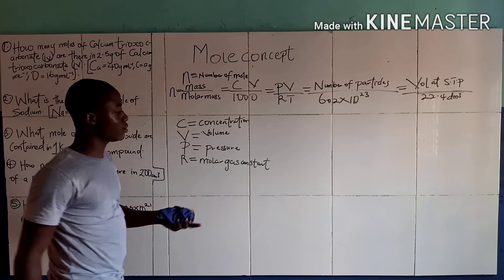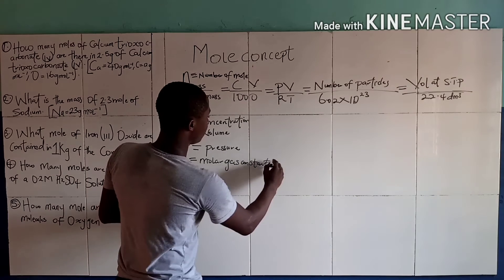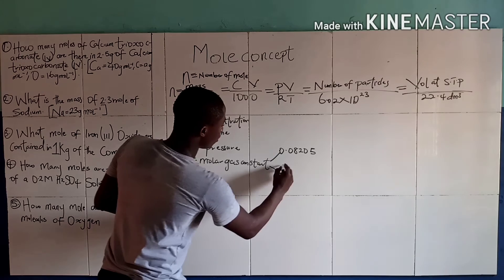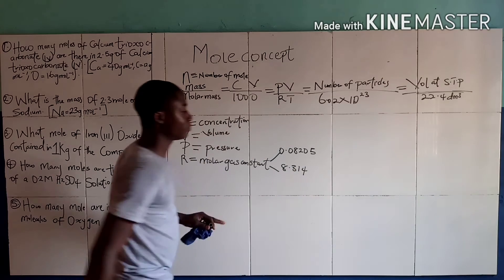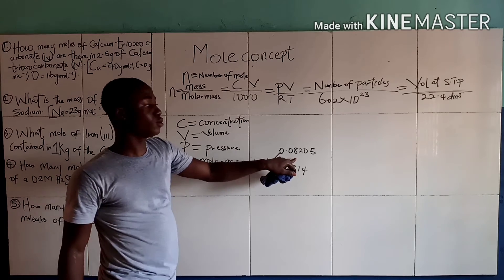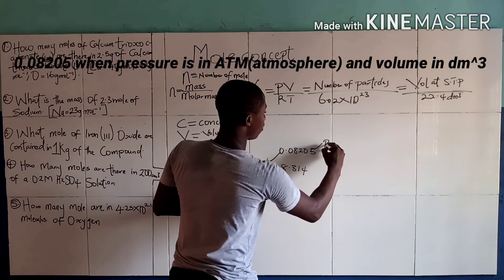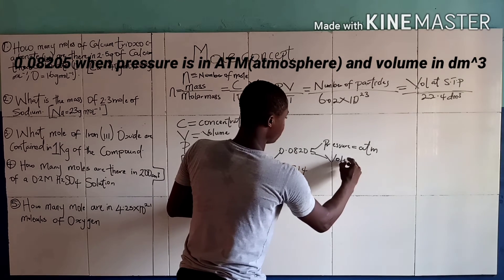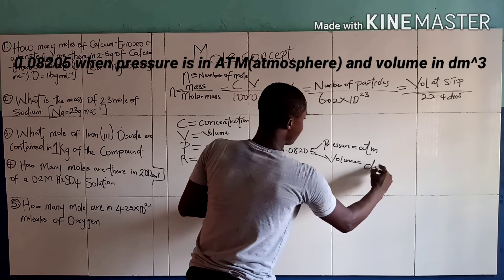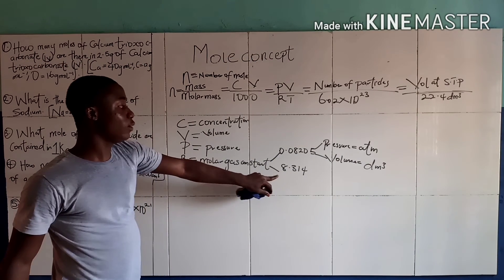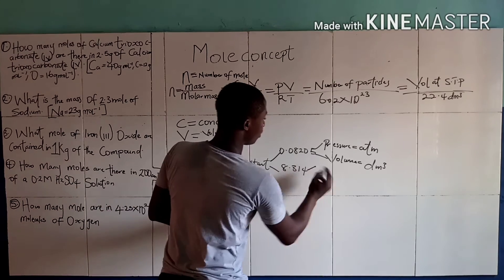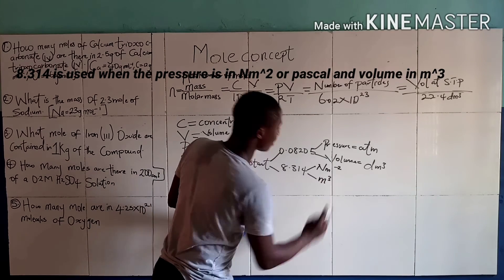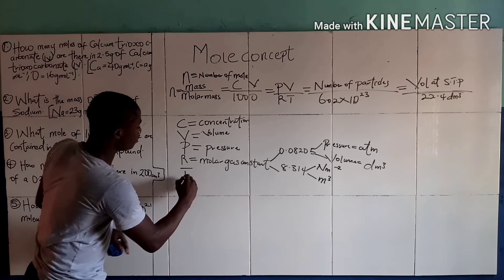The molar gas constant can be 0.08205 or 8.314. You use 0.08205 when the pressure is in atm and the volume is in dm³. You use 8.314 when the pressure is in newton per meter squared and the volume is in meter³. T here means temperature.